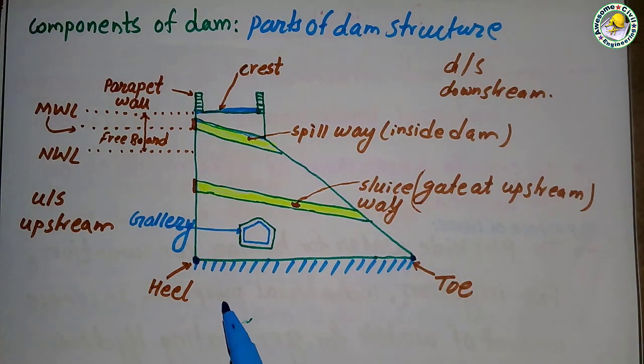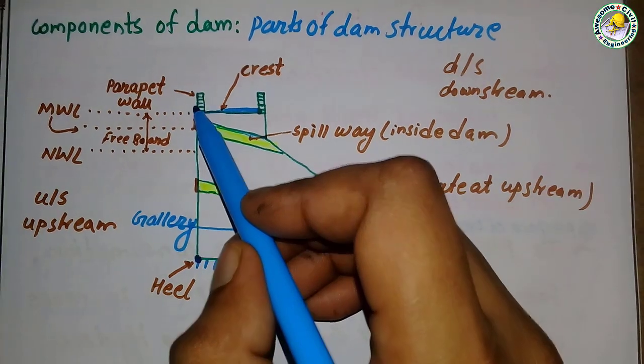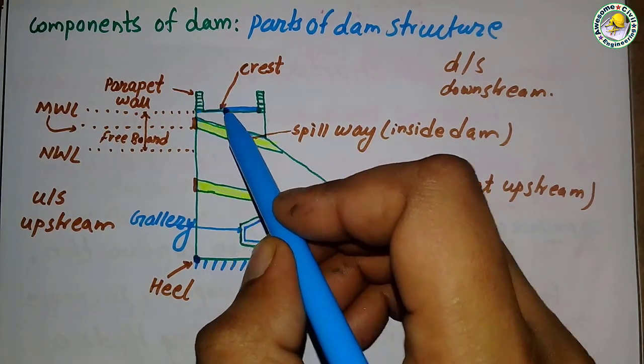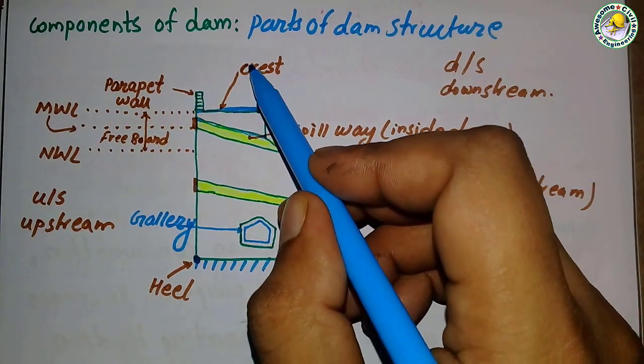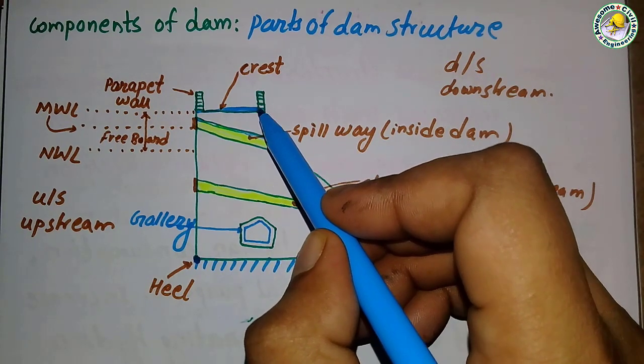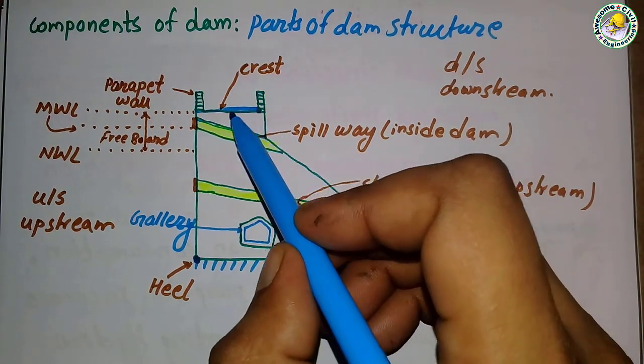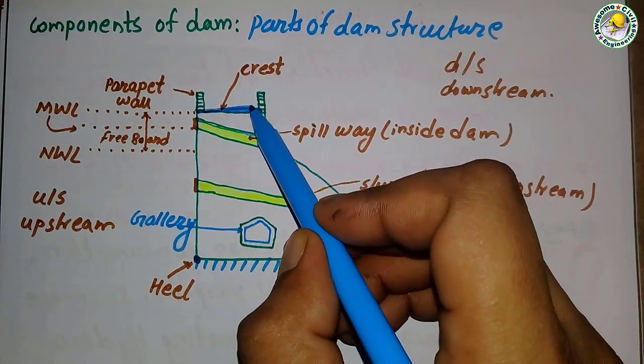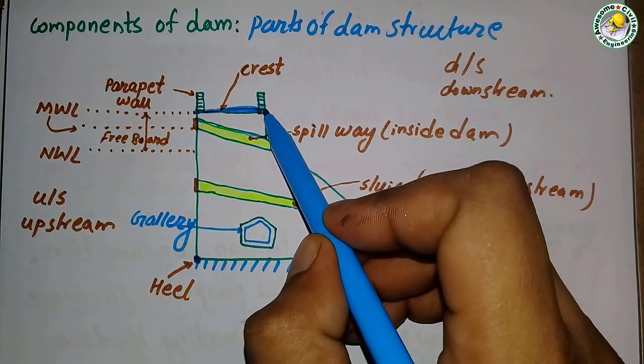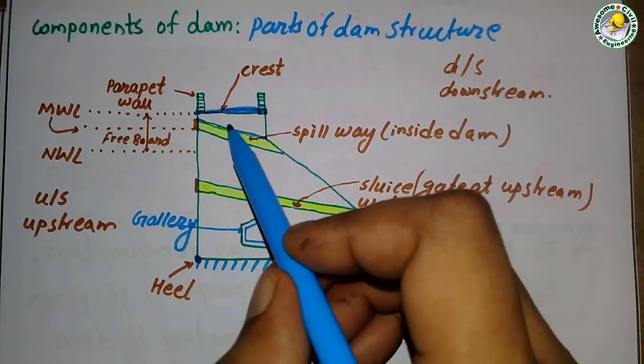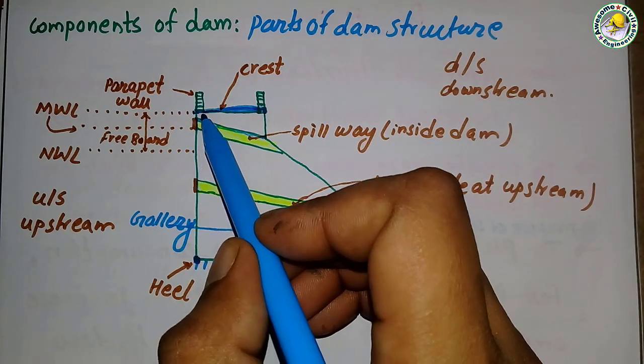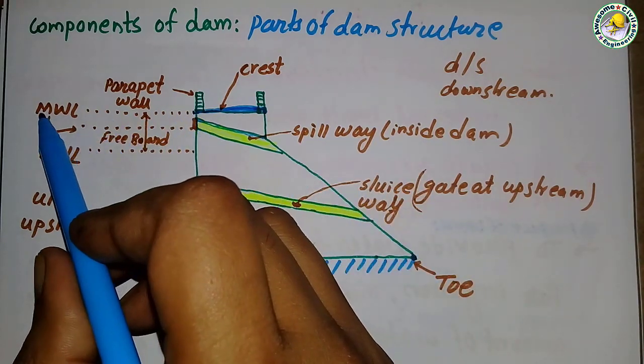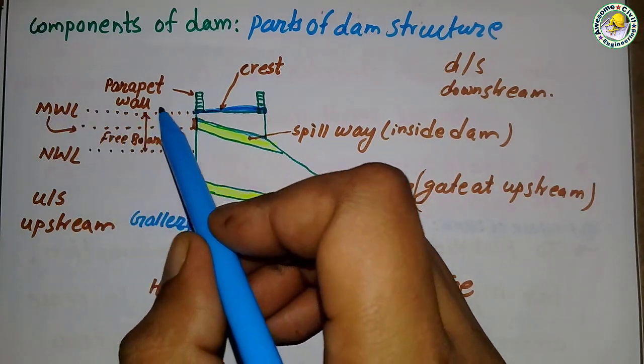...is toe. Here the parapet wall is shown on the crest of the dam, and this is the crest width from here to here. Up to the crest level, that is the maximum water level of the dam.